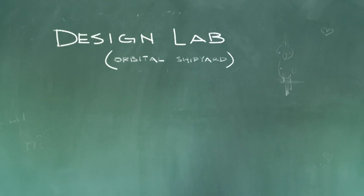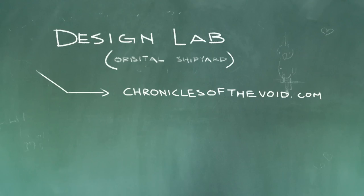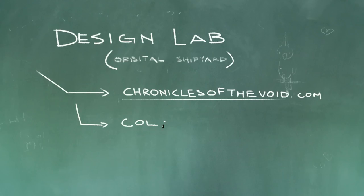Hey everyone, this is episode 5 of Design Lab. In this episode we're going to be tackling the topic of orbital shipyard — our first environmental episode. It'll be in space, so there won't be any crazy background stuff, which means we can focus on basic compositional stuff, which is most important when doing an environment. This topic is brought to you by a couple of guys making a pen-and-paper style RPG called Chronicles of the Void, and I've been doing some freelance work for them.